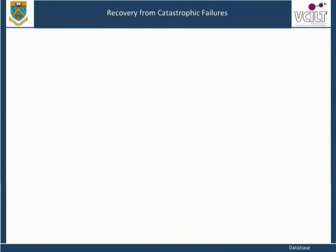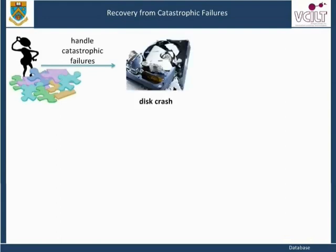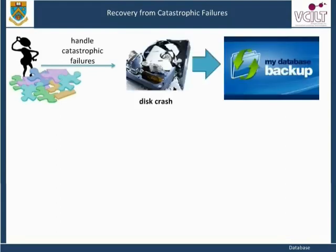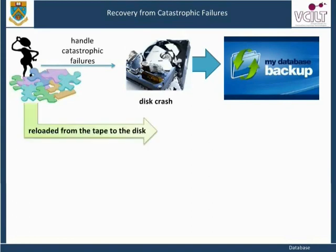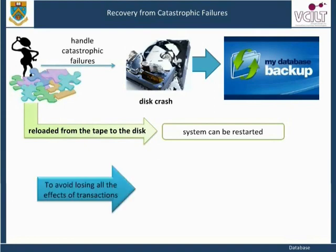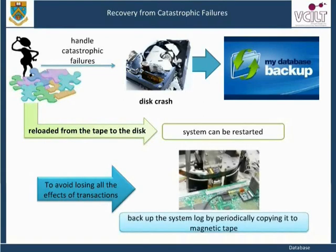Recovery from catastrophic failures: the main technique used to handle catastrophic failures, including disk crashes, is that of database backup. The whole database and the log are periodically copied onto a cheap storage medium such as magnetic tapes. In case of a catastrophic system failure, the latest backup copy can be reloaded from the tape to the disk and the system can be restarted. To avoid losing all the effects of transactions executed since the last backup, it is customary to backup the system log by periodically copying it to magnetic tape.